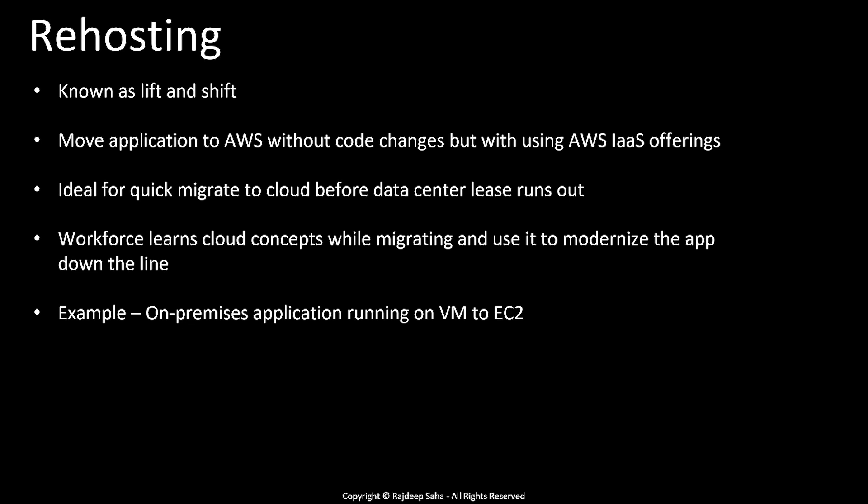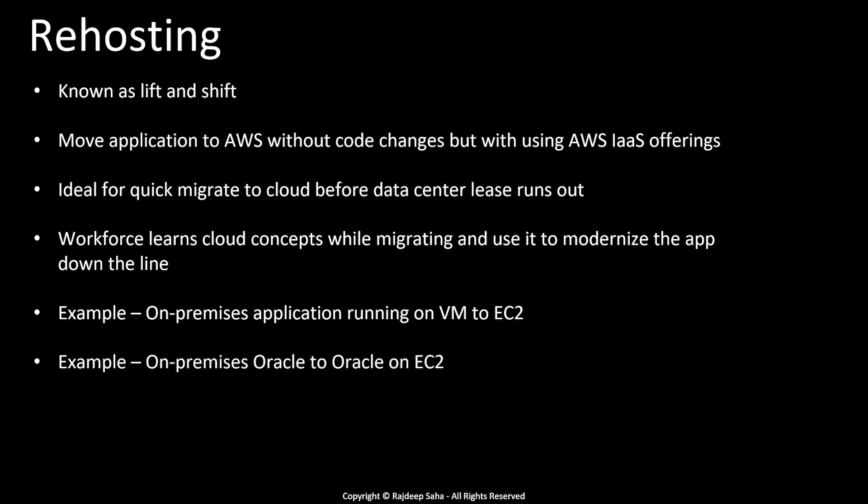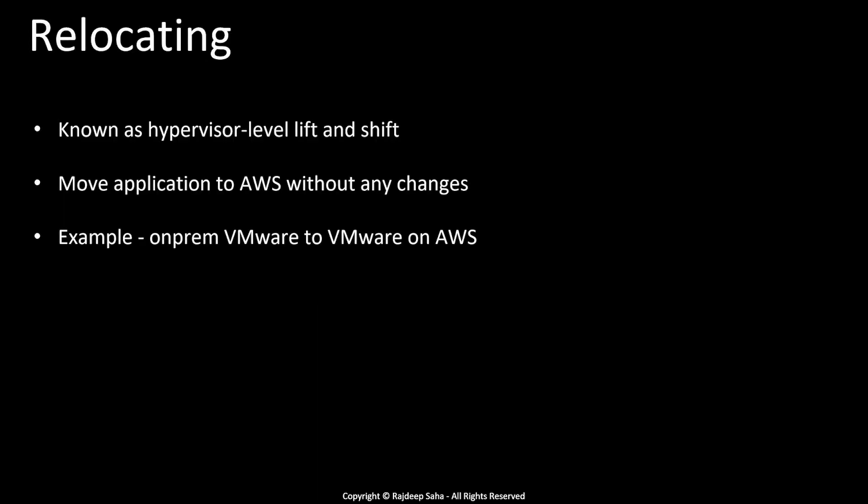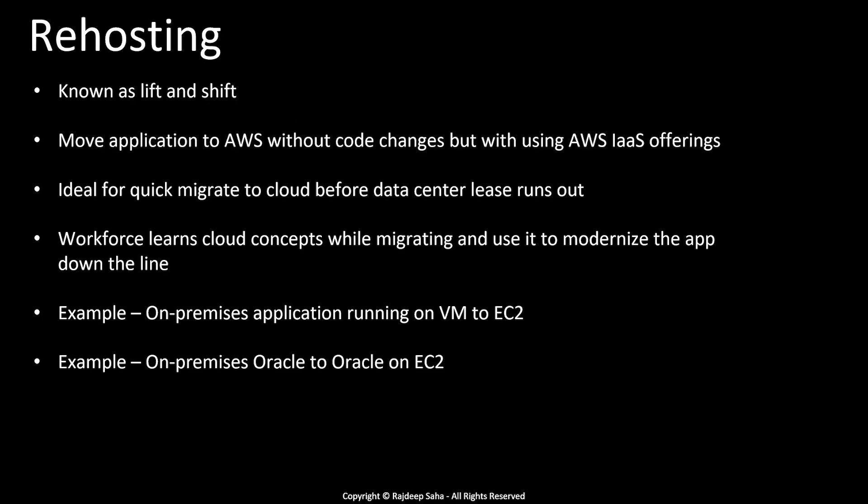For example, if your on-premises application is running on a virtual machine, you find a compatible EC2 instance type and migrate your application to EC2 without changing the code. If you're running a jar file, all you need is a compatible EC2 and you migrate to it. Another example: if you're running Oracle on-premises, you can migrate that Oracle to self-managed EC2 servers. The difference from relocating is that with rehosting, you use AWS infrastructure services, so you need to know how to provision and manage EC2. With relocating, you don't even need to learn EC2 — you just move everything as is.